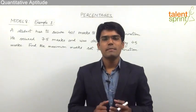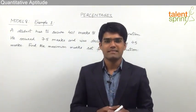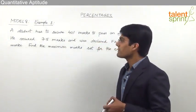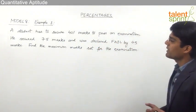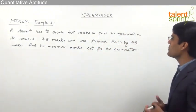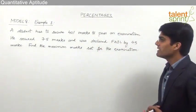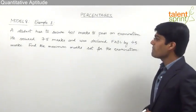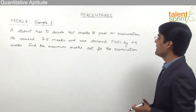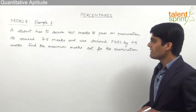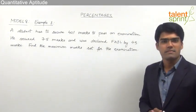Let us now take some typical examples from percentages. A student has to secure 40% marks to pass an examination. He secured 75 marks and was declared fail by 45 marks. Find the maximum marks set for the examination.